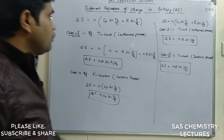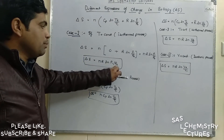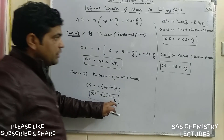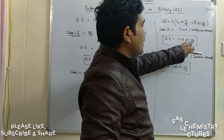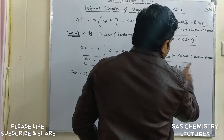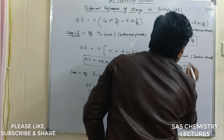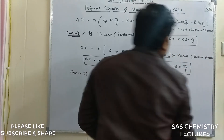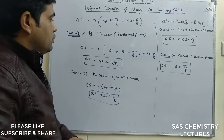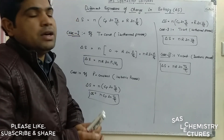So we have now derived four relations: ΔS = N·R·ln(P1/P2) for isothermal with pressures given, ΔS = N·Cp·ln(T2/T1) for isobaric, ΔS = N·R·ln(V2/V1) for isothermal with volumes given, and ΔS = N·Cv·ln(T2/T1) for isochoric. These formulas are very important for the coming exam.